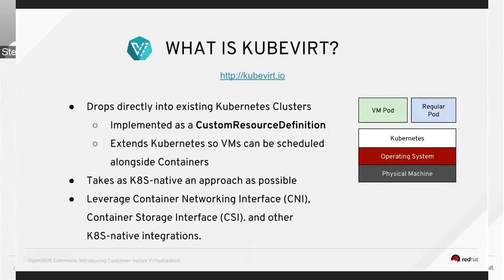This also means we can leverage constructs like the Container Networking Interface, Container Storage Interface, and other Kubernetes-native integrations — so we can share pod networking constructs and have a VM and application container plugged into the same network if we so desire. As illustrated, we also have the ability to schedule and run both VMs and application containers side by side, because ultimately these are still represented as pods from a Kubernetes scheduling point of view.